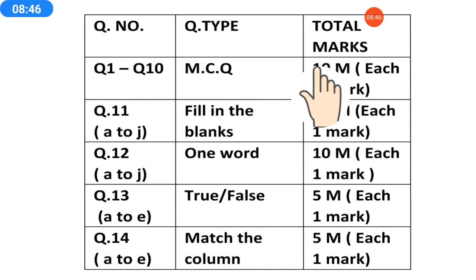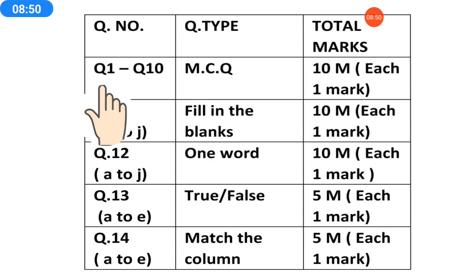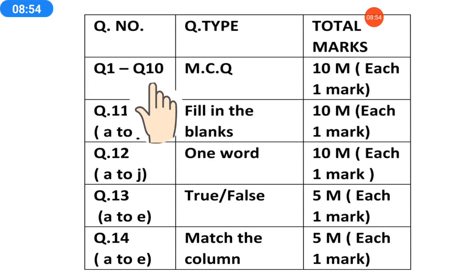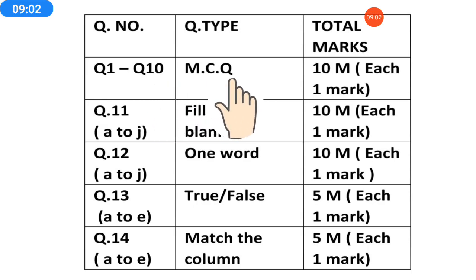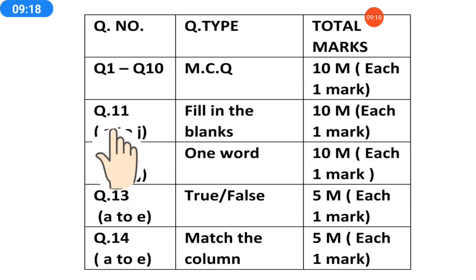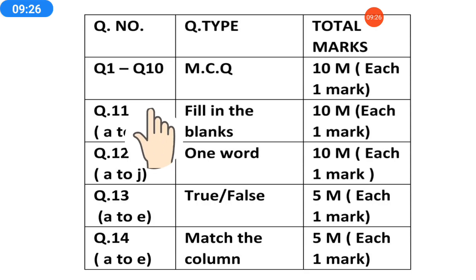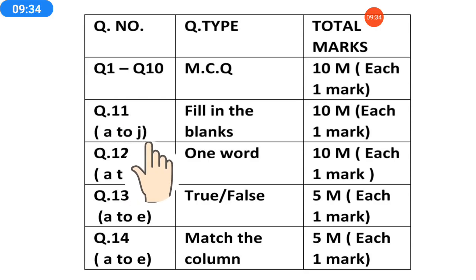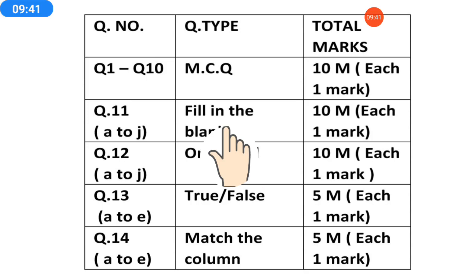Here is the blueprint of Part A. In Part A, question 1 to question 10 will be MCQs — you will have a question and 4 options, and you have to select the answer and submit. Question 11 will be fill in the blanks. In question 11, parts will be there from A to J — meaning A to J, 10 parts. So 10 fill in the blanks will be there. The numbering of fill in the blanks will be in alphabetical order A, B, C, D, E... 10 fill in the blanks of 10 marks — each one mark.